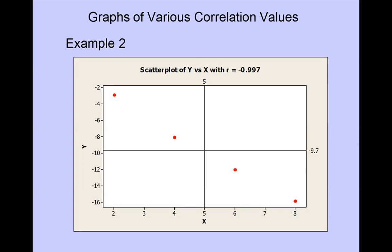In this scatter plot the correlation coefficient is negative 0.997, very close to negative 1 but not quite. So even though from our visual eyesight these points look like they would fall exactly on a straight line, they don't quite do that. You could not draw one line that would go through all four of these points exactly.